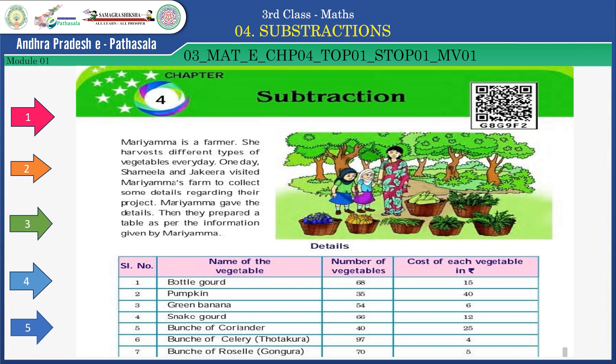Observe the table. Name of the vegetable, number of vegetables, and cost of each vegetable in rupees is given. Bottle guard: 68 vegetables, cost 15 rupees. Pumpkin: 35. Green banana: 54. Snake guard: 66. Bunch of coriander: 40. Bunch of celery. Tortacora: 97. Bunch of rosalie. Gongora: 70. Observe the table, children, and answer the following questions.